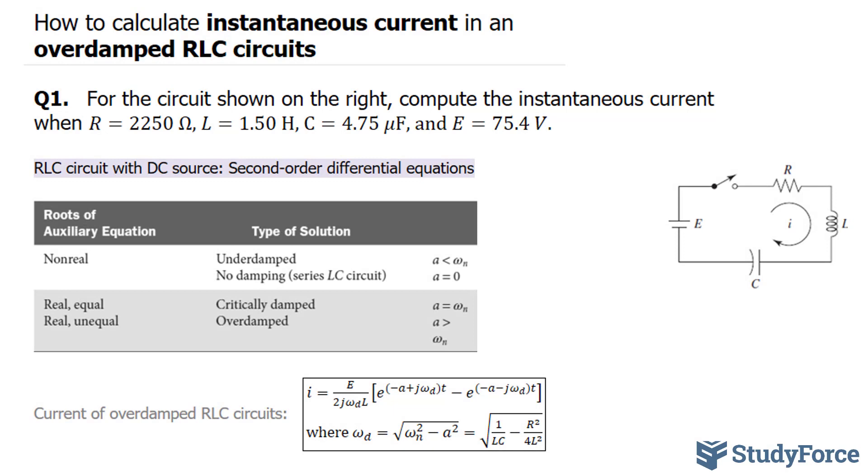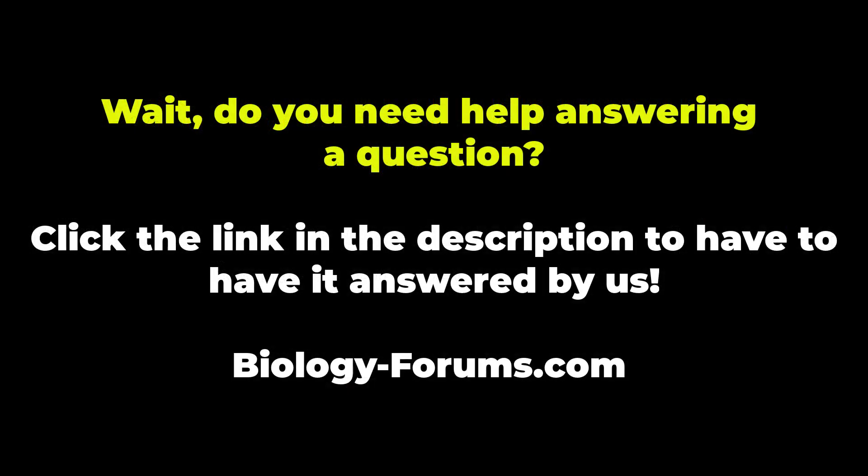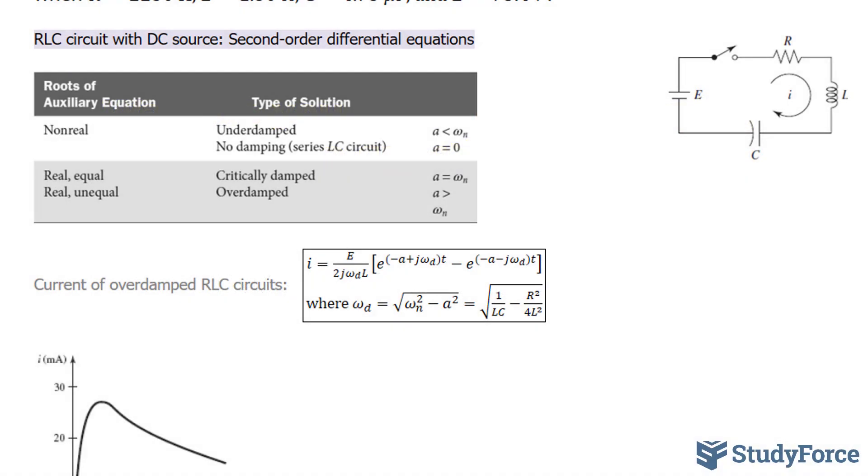Now, we're not told that this is an overdamped RLC circuit, although we can find out quite easily. In fact, what we will do, just like what we did in our first video where we looked at underdamped reactions, is we calculated A and our frequency represented by omega n. So we'll do the same thing here.